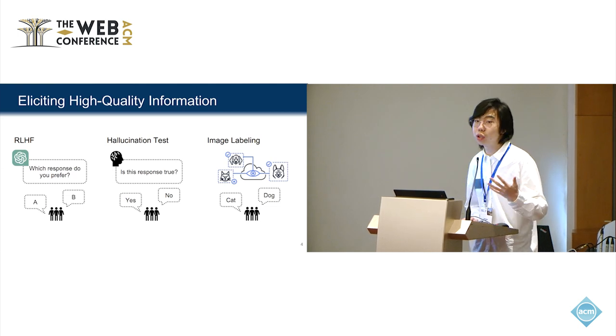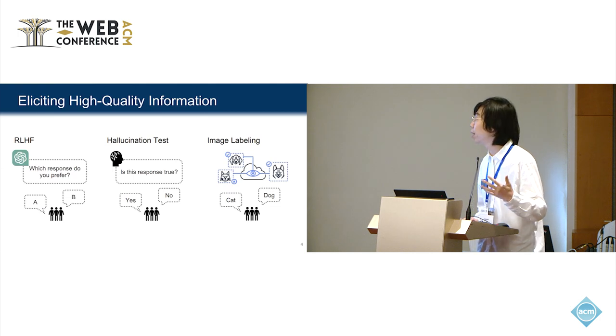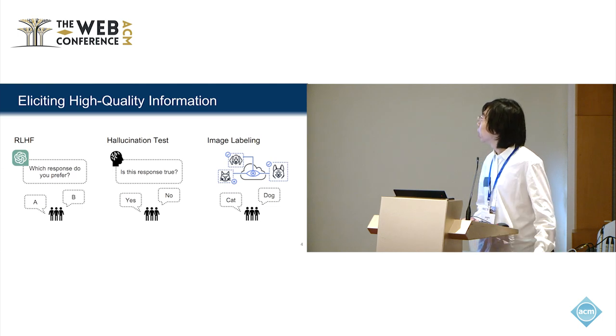In addition to AI, high-quality information from humans is also widely applied in decision-making, peer review, and many other fields.